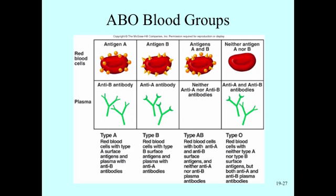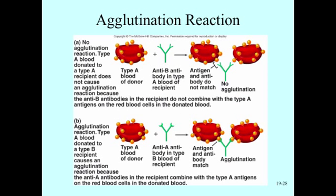What does that mean when it comes to blood donation or transfusion? If a person with type A blood is given type A blood, there won't be any issues because anti-B antibodies aren't going to react to A antigen — B antibody would only react to B antigen. These antibodies are very specific to the antigen they would combine with. This clumping is called an agglutination reaction, which is what we don't want to happen when giving somebody donated blood.